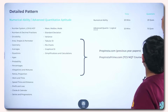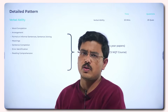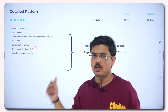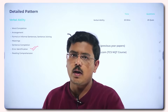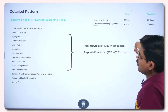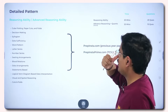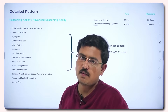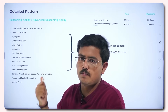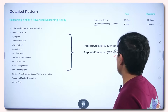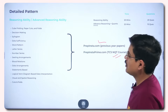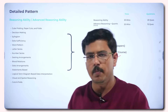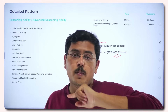For Verbal Ability, the key topics are Sentence Completion, Word Completions, Comprehensions, and Error Identification. Error Identification is where most people make mistakes, so practice it a lot. For Reasoning Ability, remember that it is a game of practice combined with understanding — visualization is very important. Try to practice as many mocks as possible. Topics include Venn Diagrams, Syllogism, Word Patterns, Number Series, Seating Arrangements, and Blood Relations.